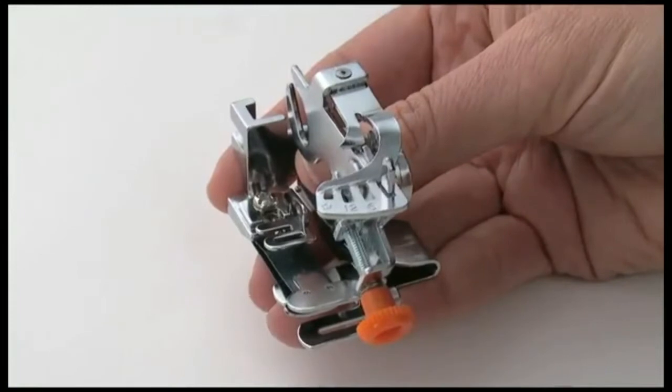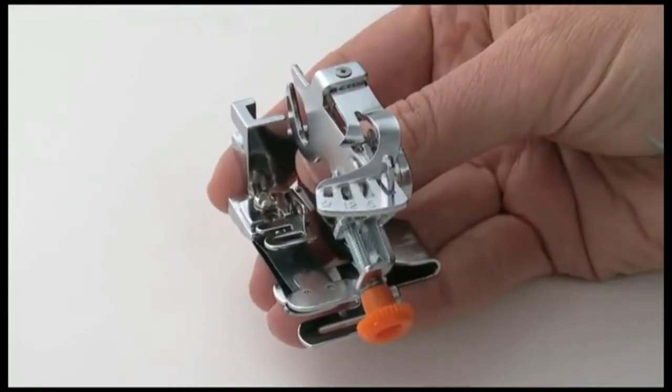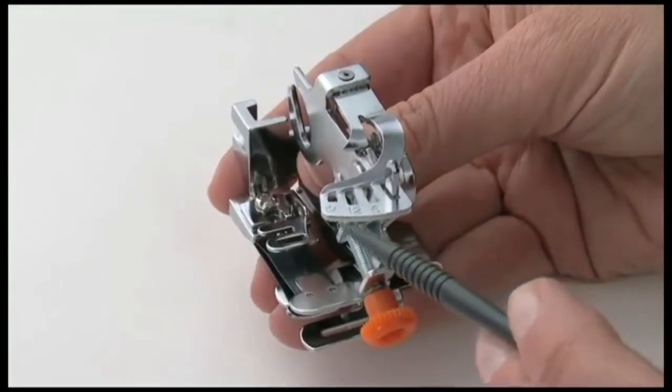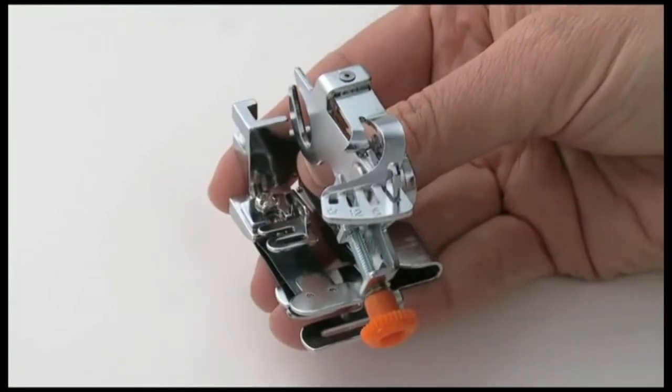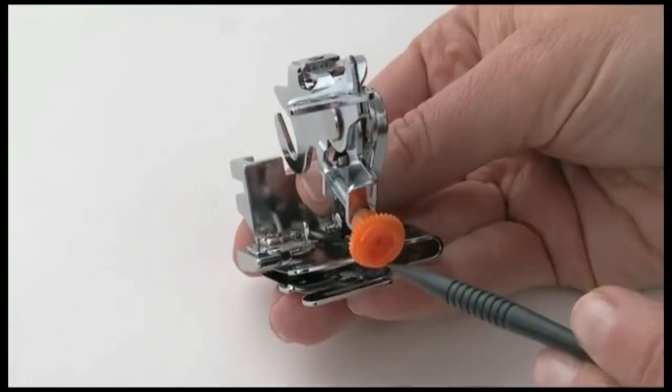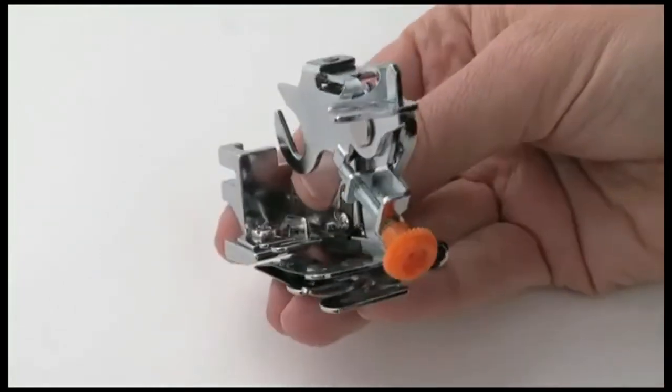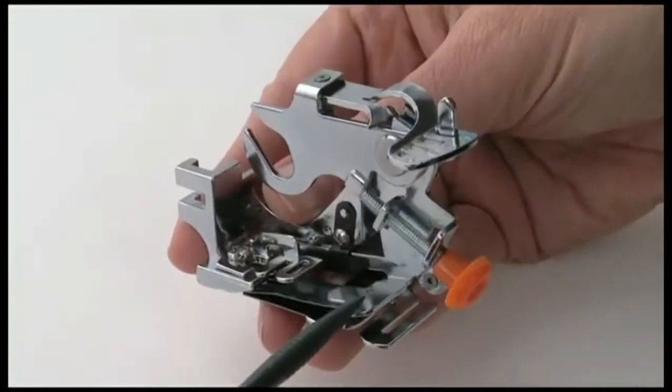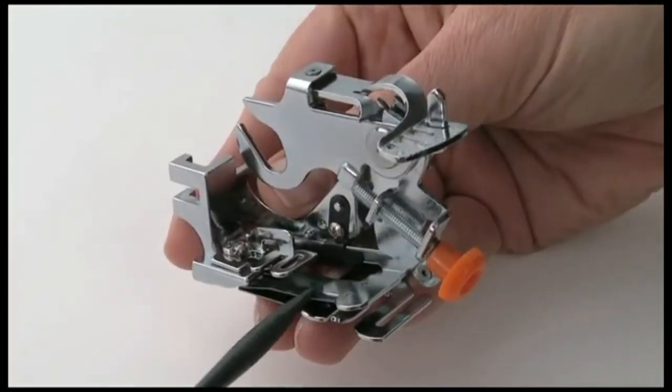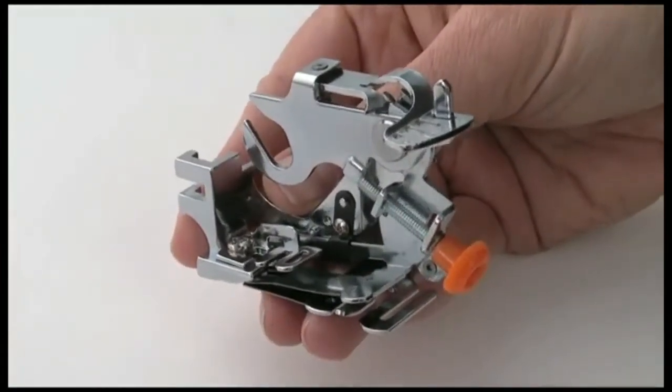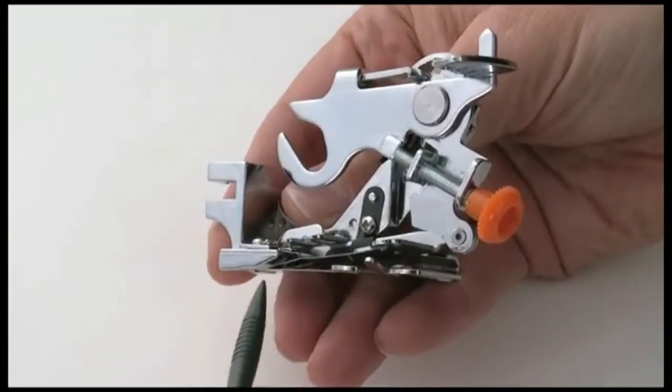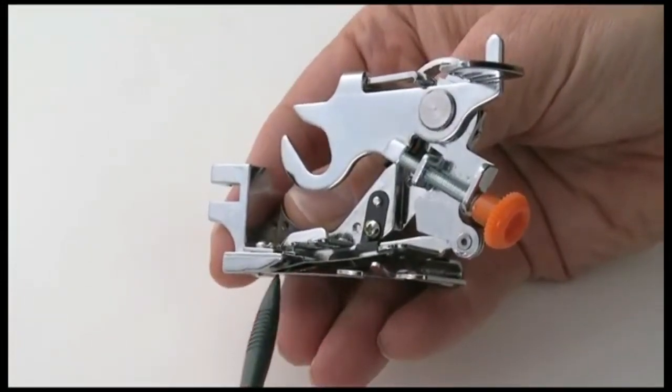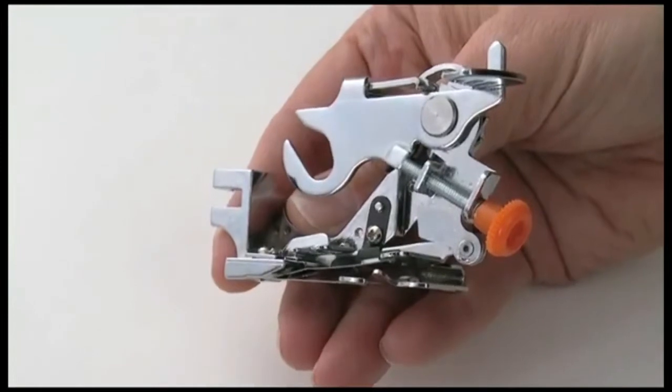The main parts of the ruffler attachment are the ruffle regulator, the adjusting screw, the fabric feed plate, sometimes called a ruffling blade, the separator blade, and the fabric guide.